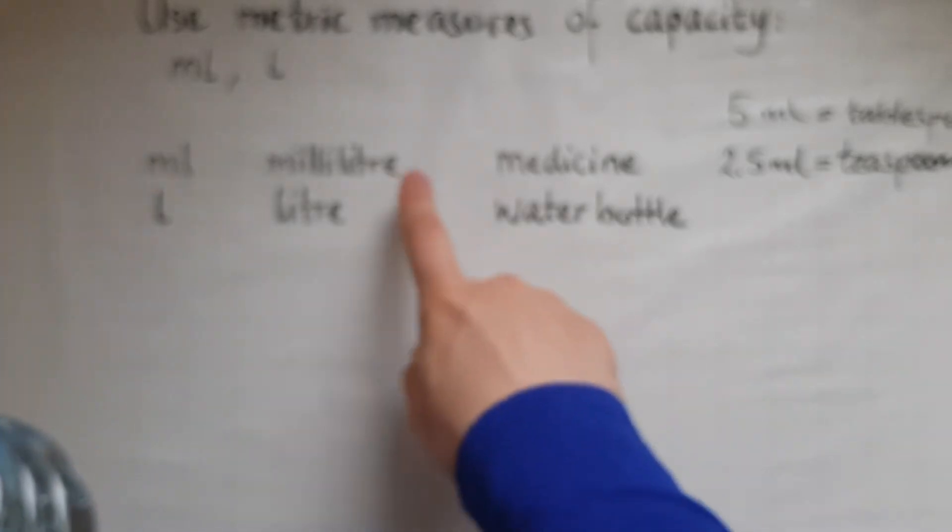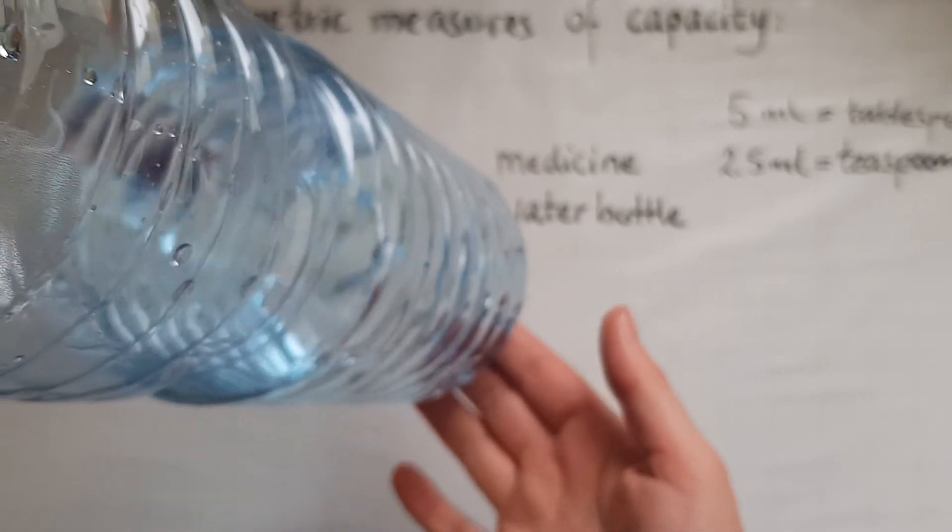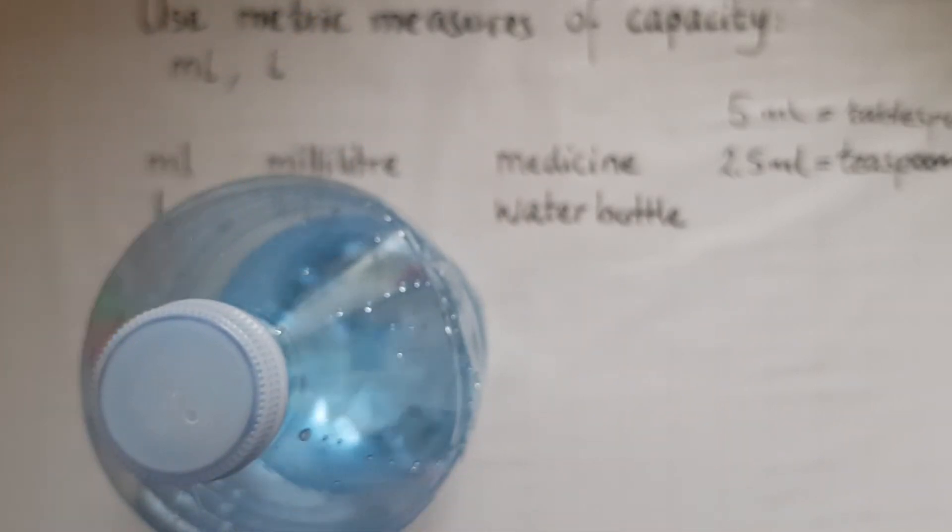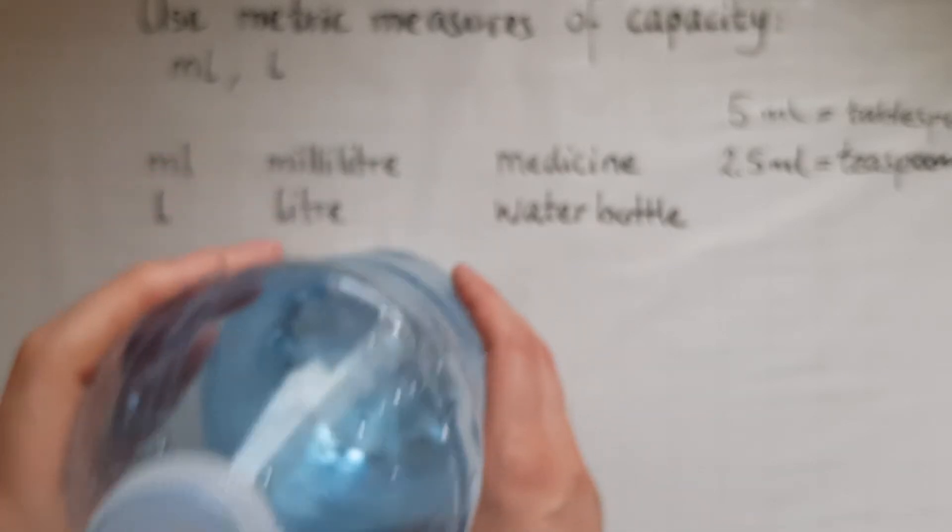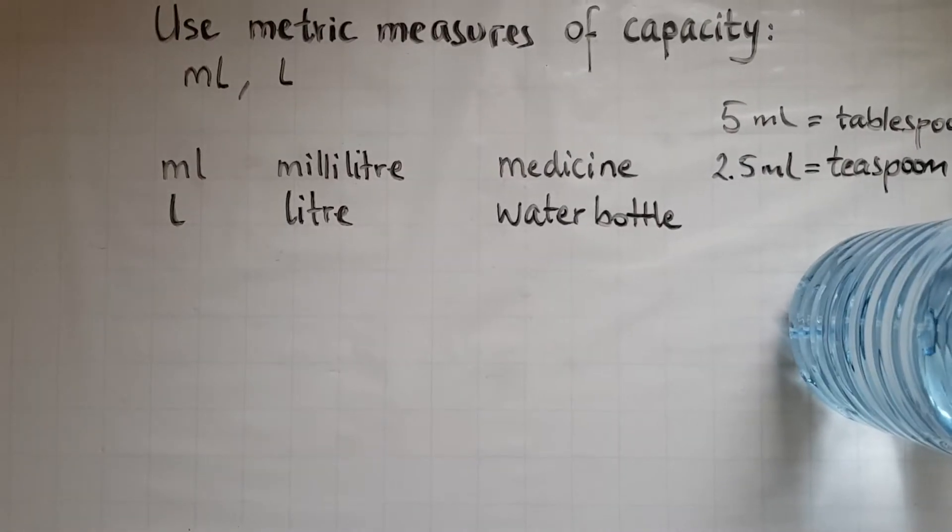And now moving on to liters. Liters are much bigger than milliliters and we've got liter bottles as well. This is a two liter bottle and it's filled halfway through. So this is half full. And that makes one liter. So that helps us remember as well.